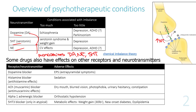A problem with managing these conditions is that many drugs also affect other receptors — they are not clean drugs. For example, a typical antipsychotic blocks dopamine receptors but also blocks histamine receptors, acetylcholine receptors, and alpha-1 adrenergic receptors, leading to additional adverse effects.